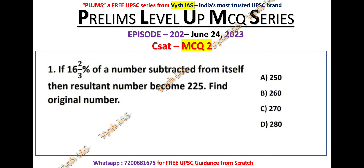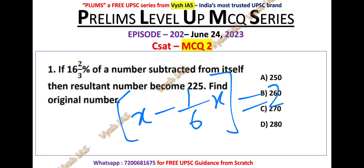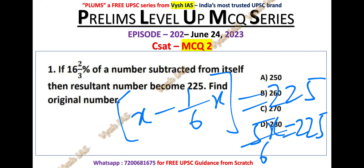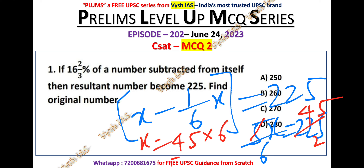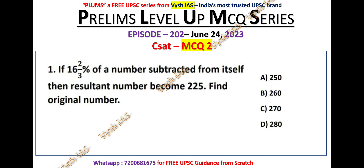16⅔% is nothing but 1/6. If 1/6 of the number is subtracted from itself, and the number is x, then: x minus (1/6)x equals 225. Solving: 5x/6 = 225, so x = 45 × 6 = 270. So 270 is the original number, and option C is the correct answer for MCQ number 2.